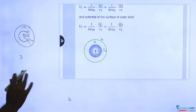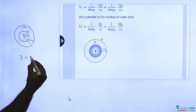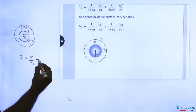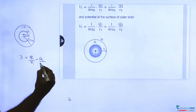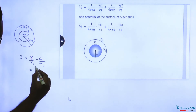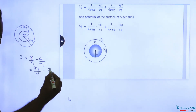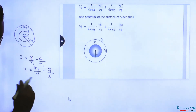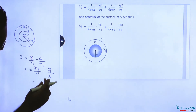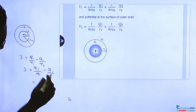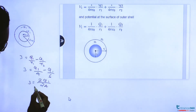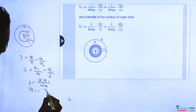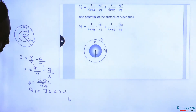In CGS units, we can write the potential as q by r1, minus the induced charge contribution minus q1 by r2. So: q1 by 4 minus q1 by 6 equals 3 electrostatic units. This simplifies to (6 minus 4) times q1 by 24, giving us q1 equals 36 electrostatic units.